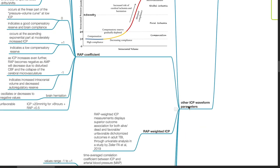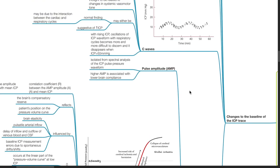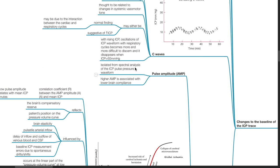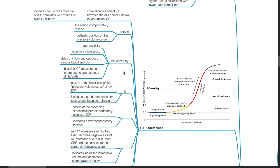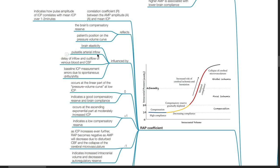Other ICP waveform parameters. Pulse amplitude, AMP, is isolated from spectral analysis of the ICP pulse pressure waveform. Higher AMP is associated with lower brain compliance. The RAP coefficient is the correlation coefficient R between the AMP amplitude A and the mean ICP. It indicates how pulse amplitude of ICP correlates with mean ICP over 1 to 2 minutes. It reflects the brain's compensatory reserve and the patient's position on the pressure volume curve. It is influenced by brain elasticity, pulsatile arterial inflow, delay of inflow and outflow of venous blood and CSF, and basal ICP measurement errors due to spontaneous drifts or shifts.